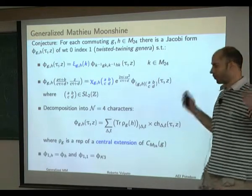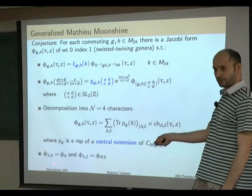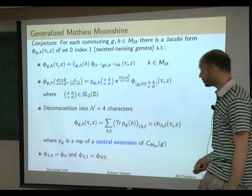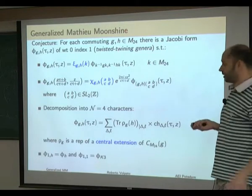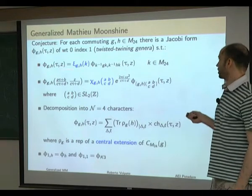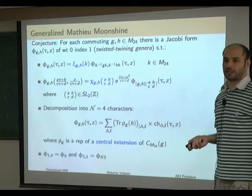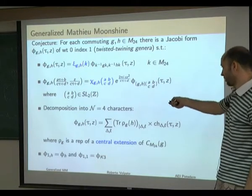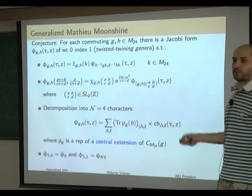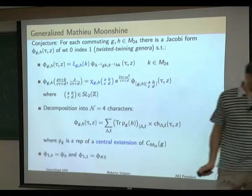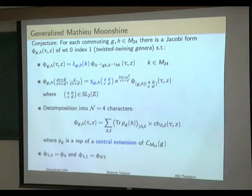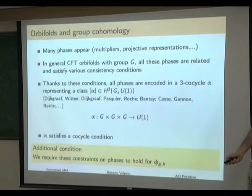We want a decomposition into N=4 characters where coefficients are characters of projective representations of the centralizer, or representations of some central extension. A normalization condition: when G is the identity, we recover the ordinary twining genus; when both G and H are the identity, we get the elliptic genus of K3. Using these conditions alone is very difficult to check if these functions exist because of the many undetermined phases. We need further constraints from the theory of CFT orbifolds.